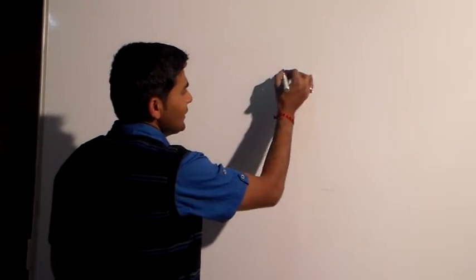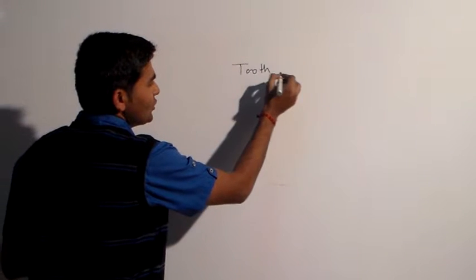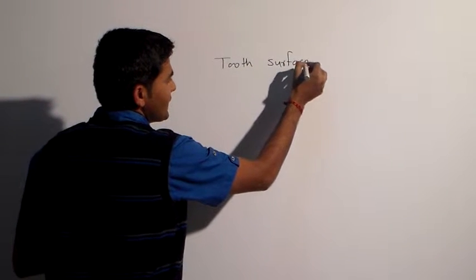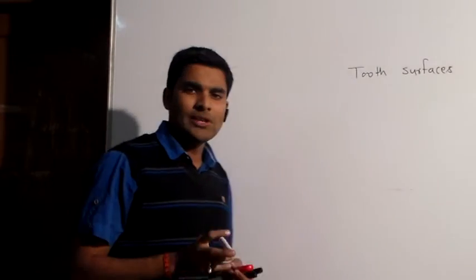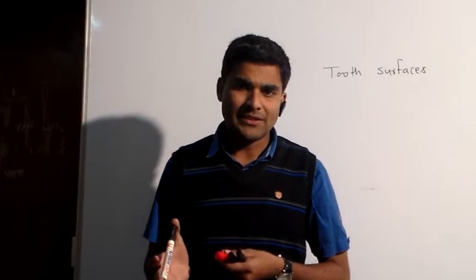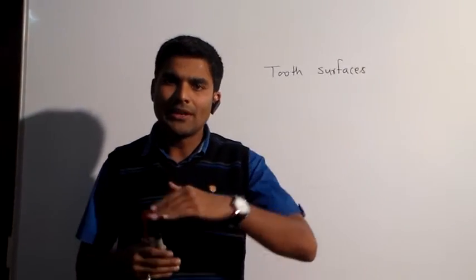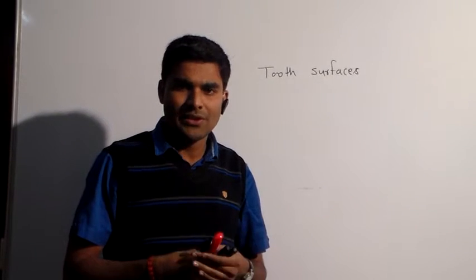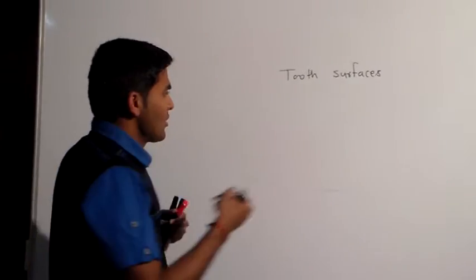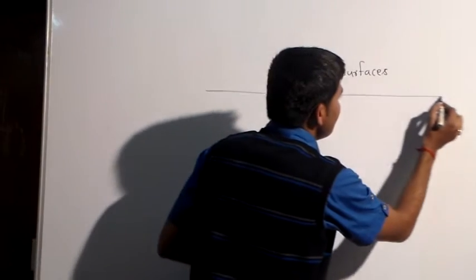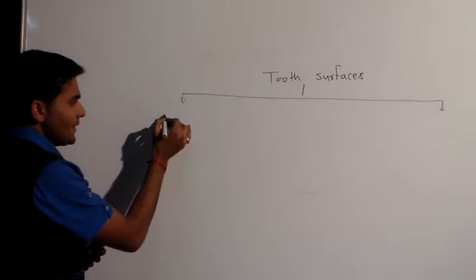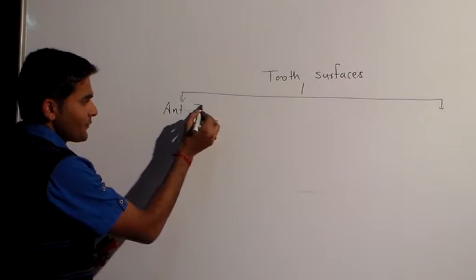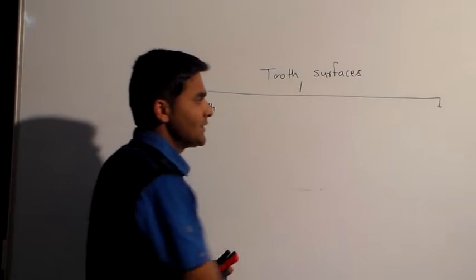Today we will be discussing tooth surfaces. In our oral cavity, a total of 52 teeth are present: 32 are permanent while the deciduous are 20. The 32 permanent teeth are divided into two categories: anterior teeth and posterior teeth.